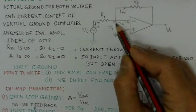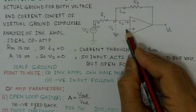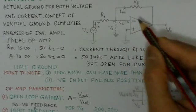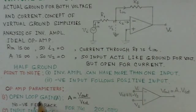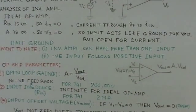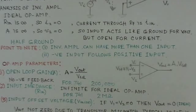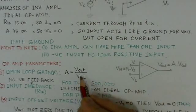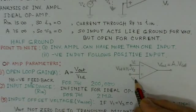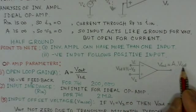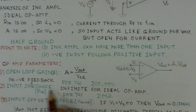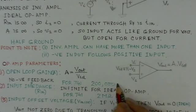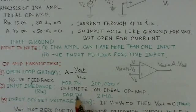Now we will look at the different operational amplifier parameters. The first parameter is open-loop gain. V_id equals V1 minus V2, and V_out equals A times V_id with no negative feedback. For the 741 op-amp, the open-loop gain is about 200,000.